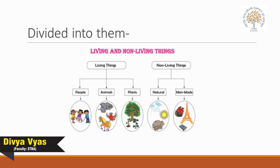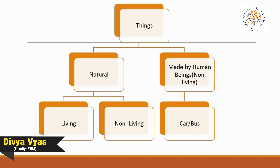Tables, chairs, books, toys, clothes, and cars are made by human beings. Tables and chairs are made by a carpenter, and toys or cars are made in factories. They can all be divided into natural things and things made by human beings.